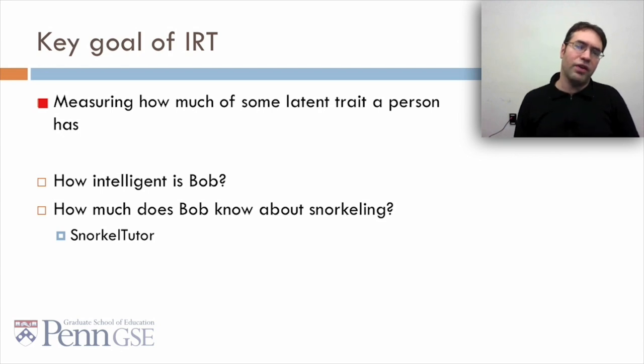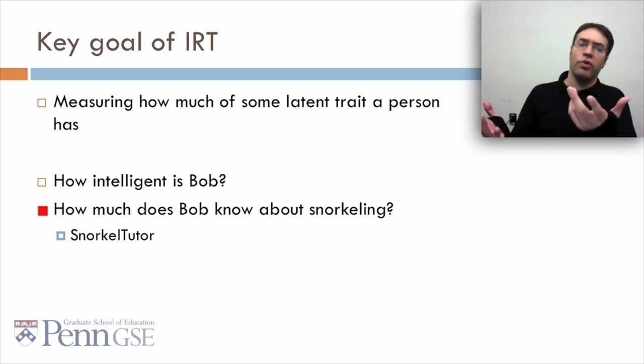The key goal of IRT is different than the key goal of BKT or PFA. It's to measure how much of some latent trait or general domain a person has. So instead of saying can Bob do 2 plus 5, it says how smart is Bob? Instead of saying does Bob know this specific skill about snorkeling, it says how much does Bob know about snorkeling in general?